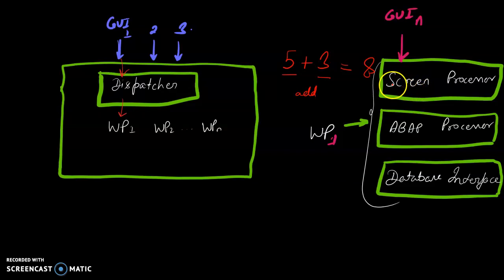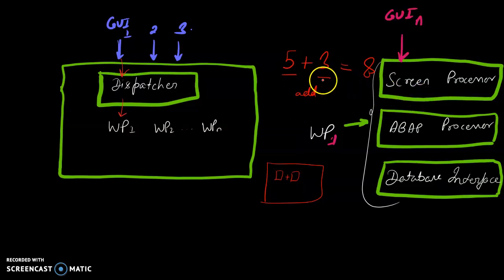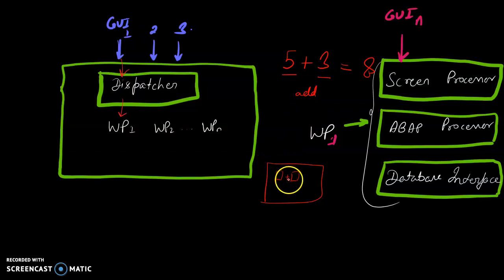How does the screen processor work? The screen processor controls the user interaction — for example, presenting a box to input a value and then passing the logic to the ABAP processor for execution.